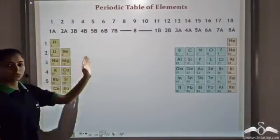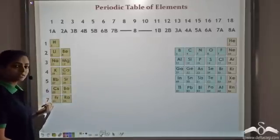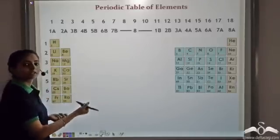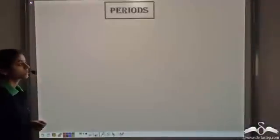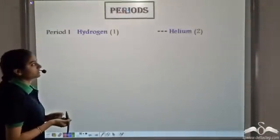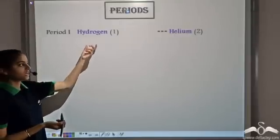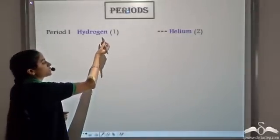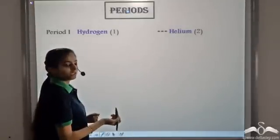We know that the horizontal rows in the periodic table are known as periods. Let's see if the elements in particular periods follow any particular trend. The first period has elements hydrogen and helium. The electronic configuration of hydrogen is 1, and the electronic configuration of helium is 2.